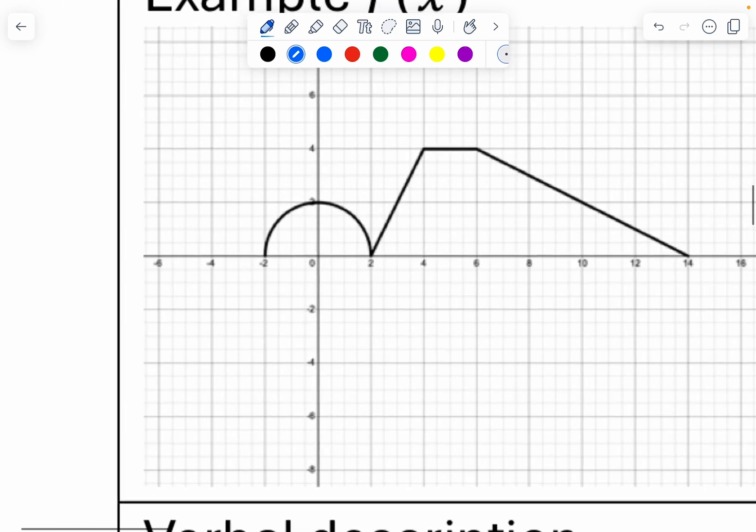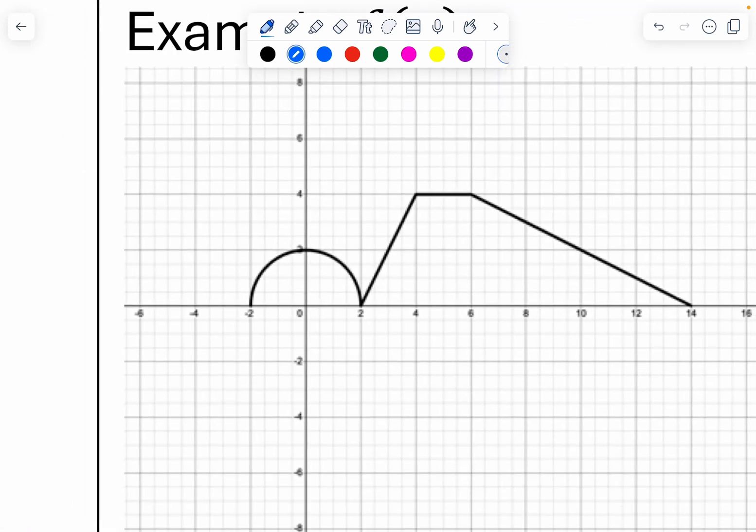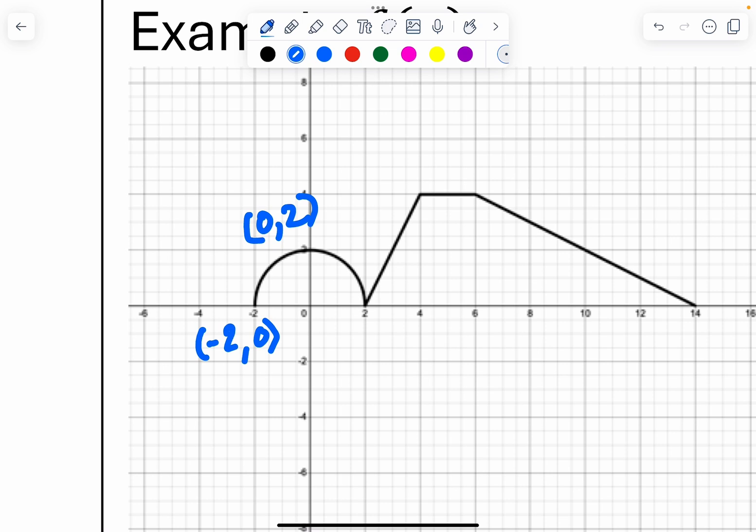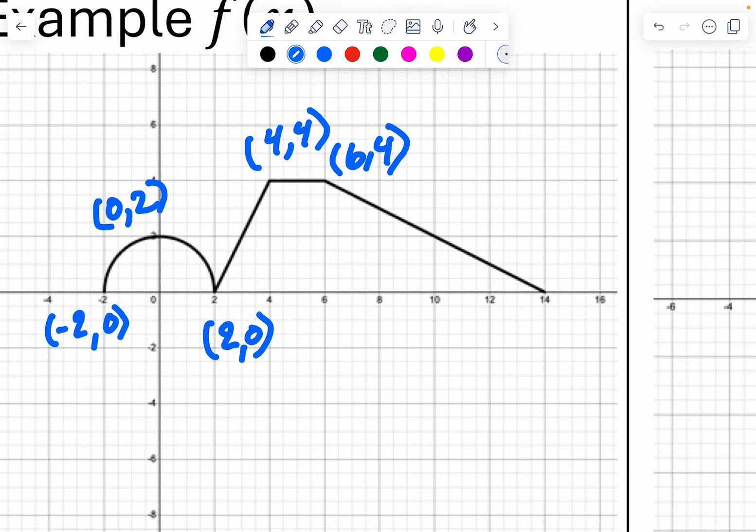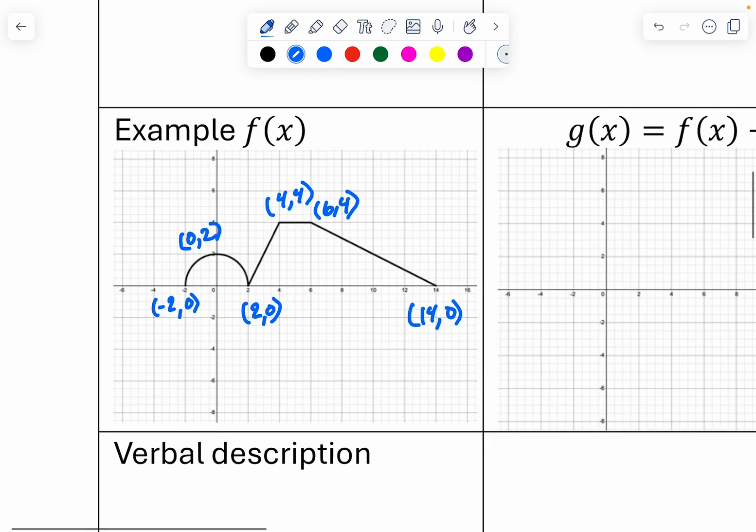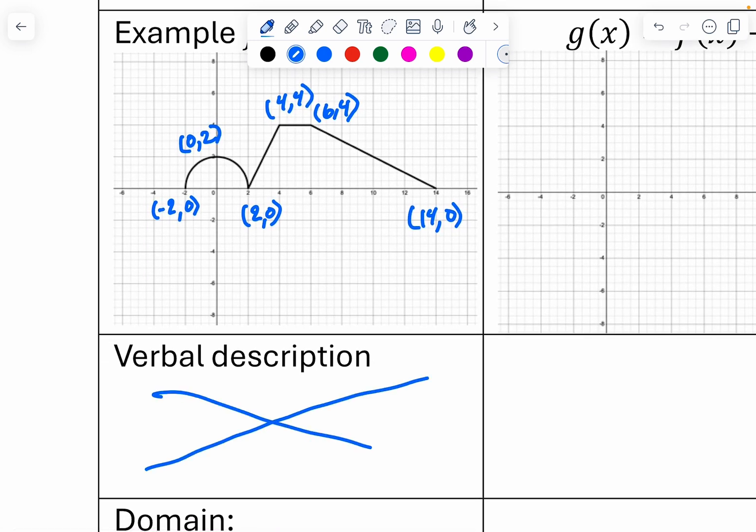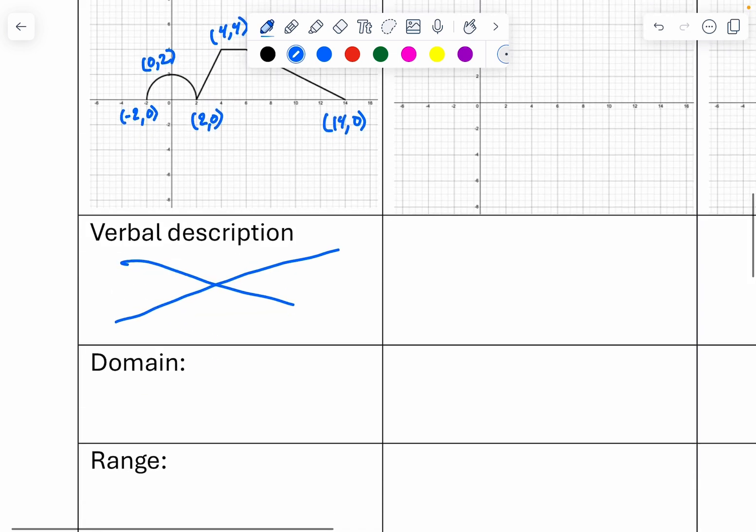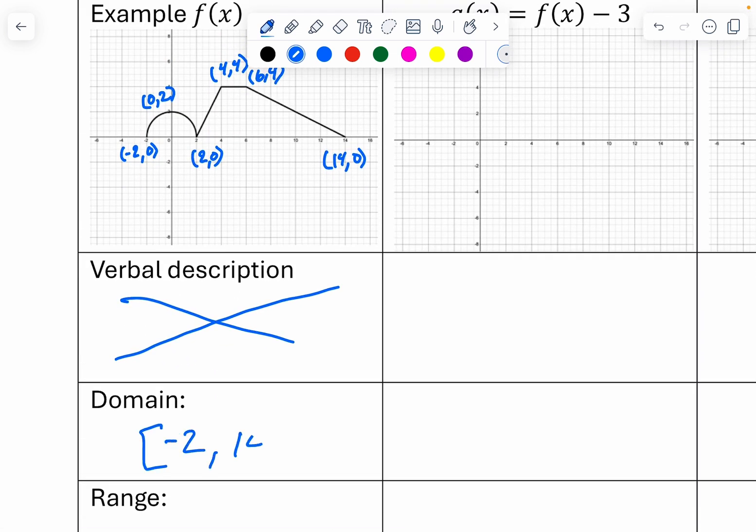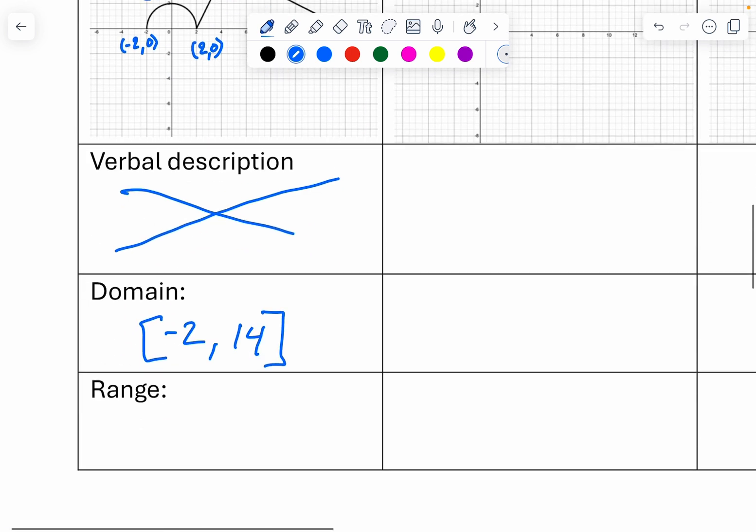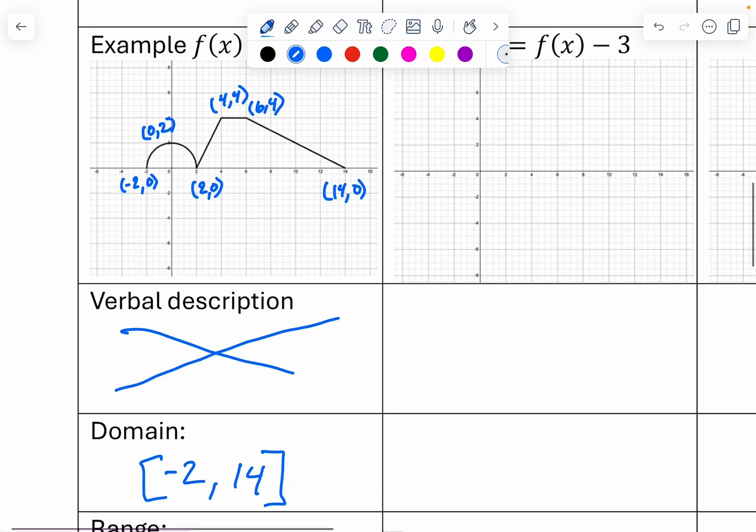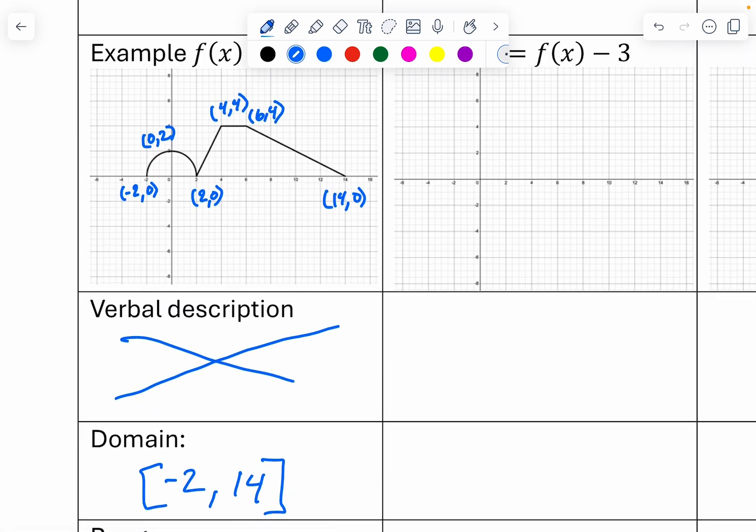So I started with some random, I was having fun graphing. Yes, I did half a circle. Let's label some of these points. This is negative 2, 0. Here I see 0, 2. This one is 2, 0. Then there's a little line that goes to 4, 4, I think. Then it was cruising along until 6, 4. And then it was a line coming down to 14, 0. Having it here on this graph might help us in a second. I just wanted to do something kind of weird, but easy enough for me to create in Desmos.